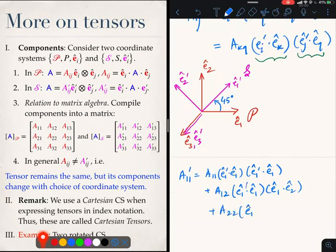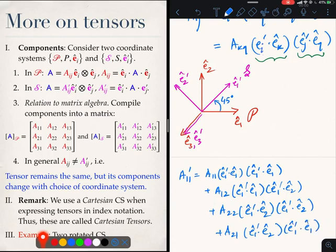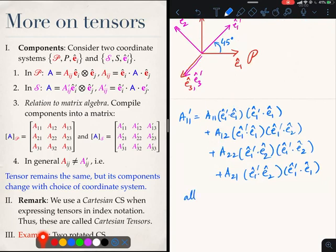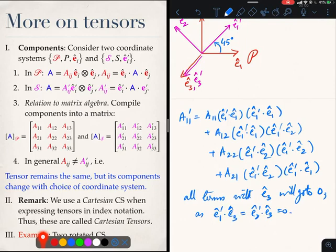All terms with E3 or E3 prime will go to 0. E1 prime dot E3 is equal to E2 prime dot E3 is equal to 0.